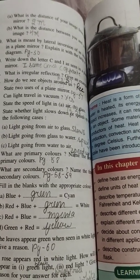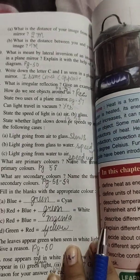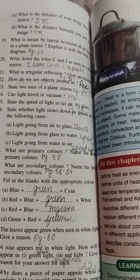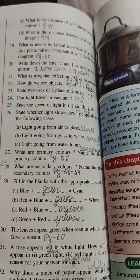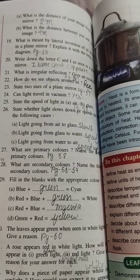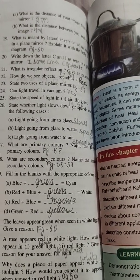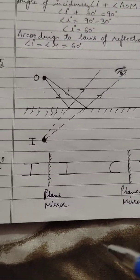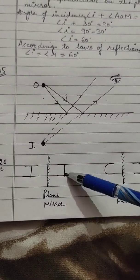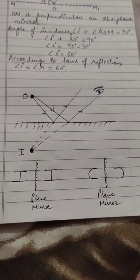What is meant by lateral inversion of an image in a plane mirror? You can write this from page number 56, along with the diagram from your book. For example, the letter I will appear the same, but the letter C will appear reversed, i.e., opposite.